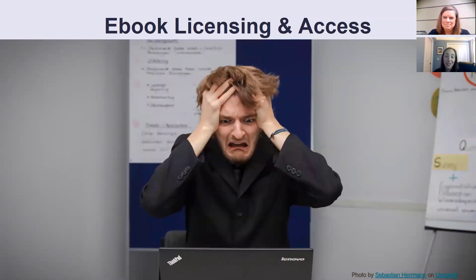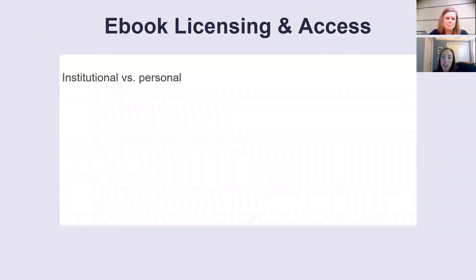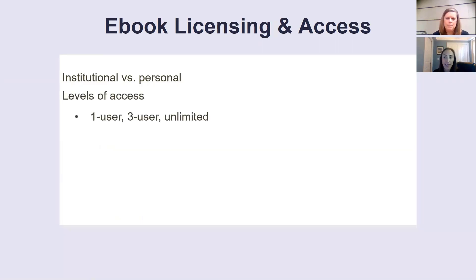We have other pain points that have nothing to do with the pandemic, such as e-book licensing and access. The licenses libraries purchase — institutional licenses — are not the same as those you can purchase personally. So while you can buy an e-book for your Kindle, it doesn't necessarily mean the library can purchase the same title electronically. When we can purchase an e-book license, the levels of access vary and are set by the publisher for each specific title. Levels can include one user, three user, or unlimited. Unfortunately, unlimited access is not always an option, but we try to purchase that whenever possible, especially if we're made aware the book will be used in a course.